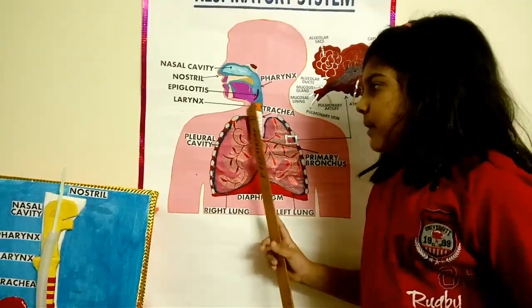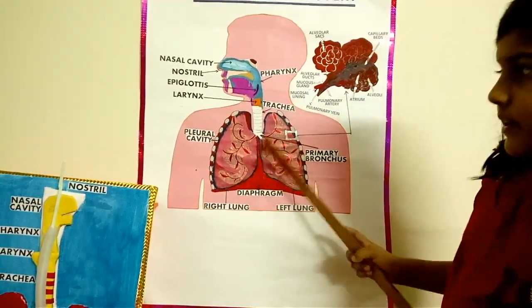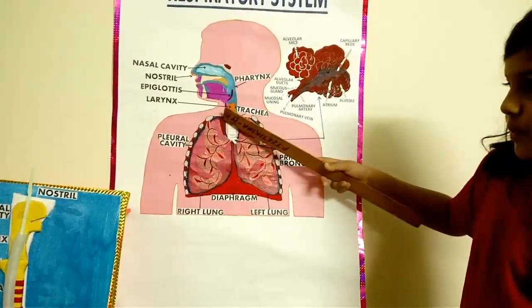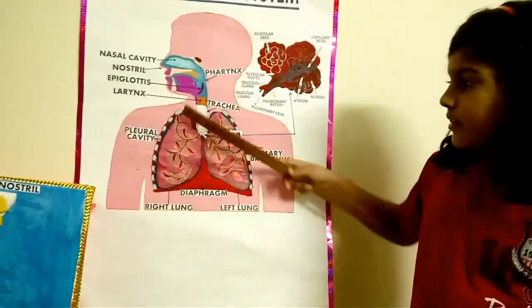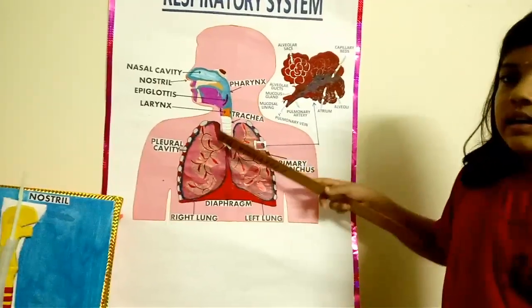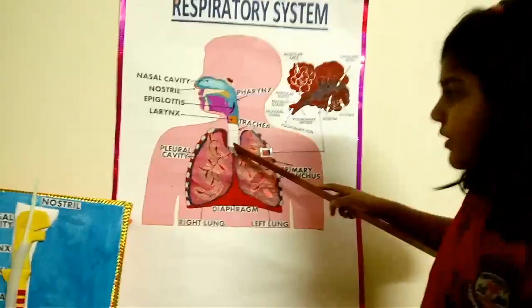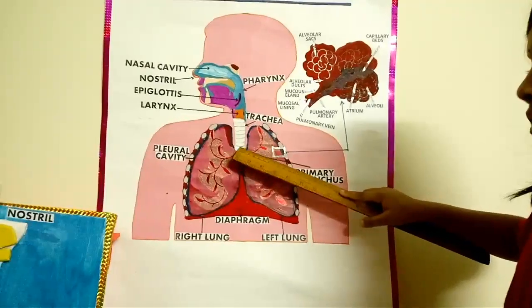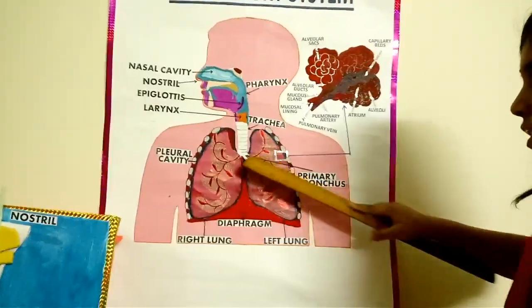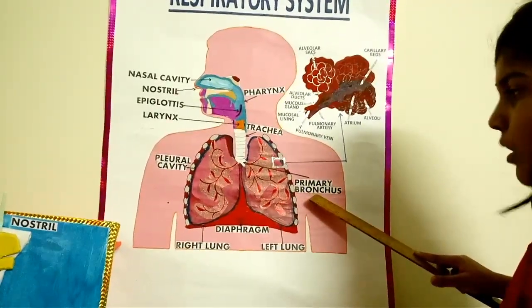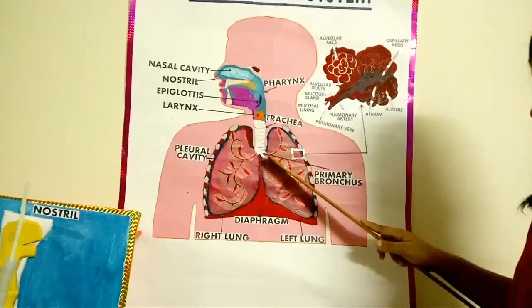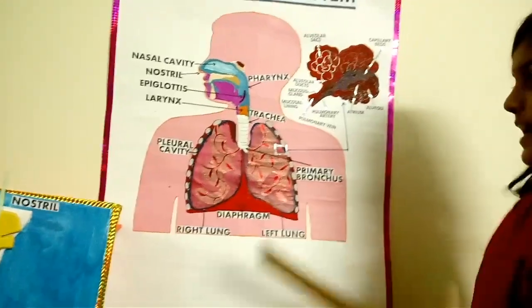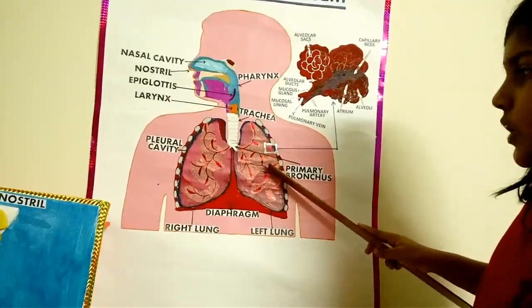This is the pleural cavity, also known as the pleural space. It is the border of the lungs and protects the lungs. Then finally to the bronchi — each one is called a bronchus, and this is called the primary bronchus. Going further inside, they branch repeatedly into many smaller tubes called bronchioles.